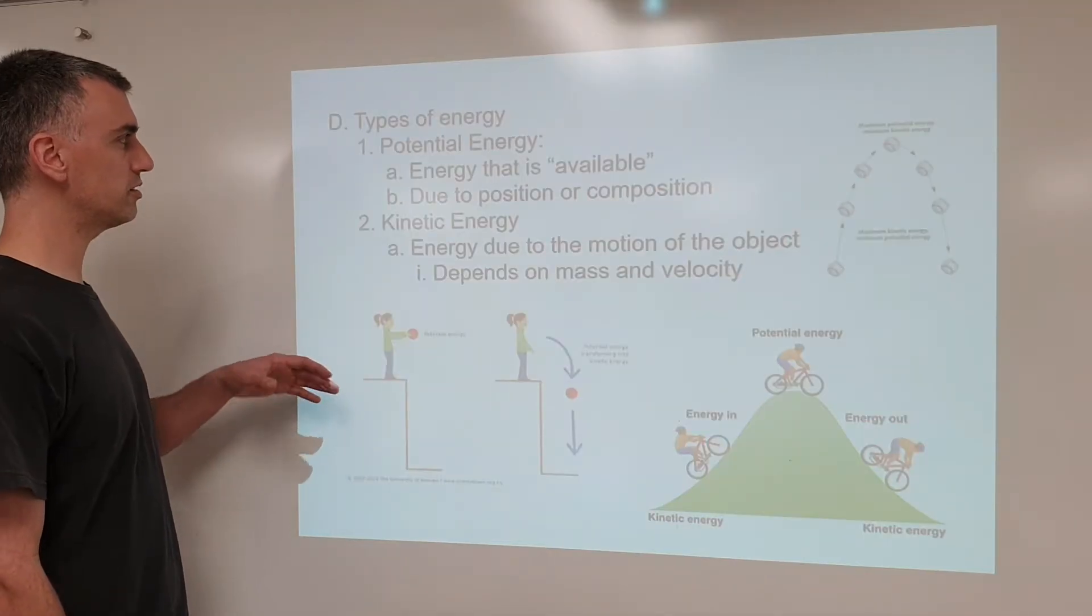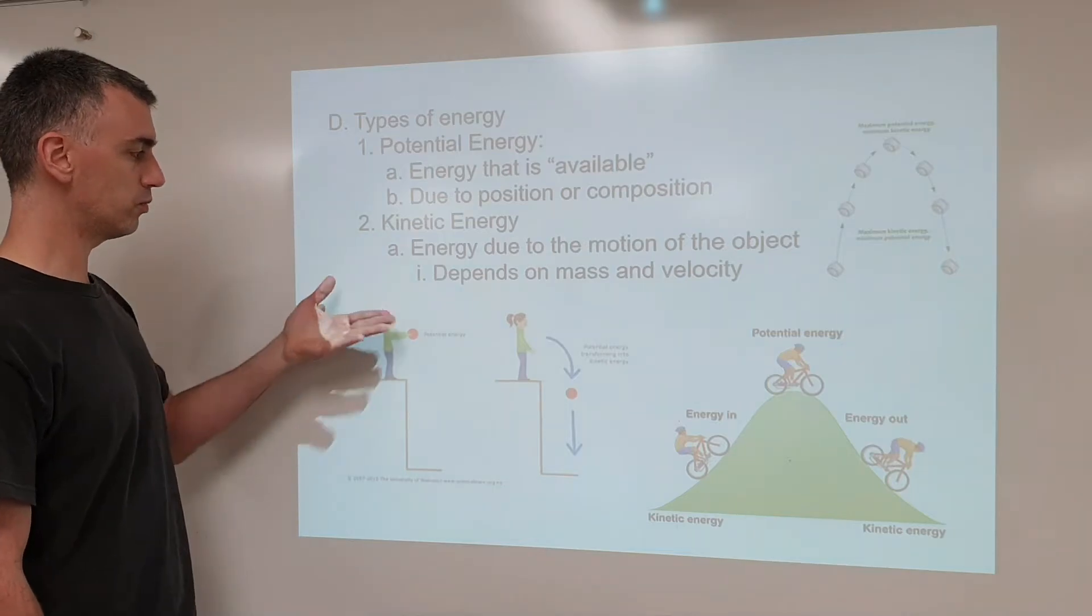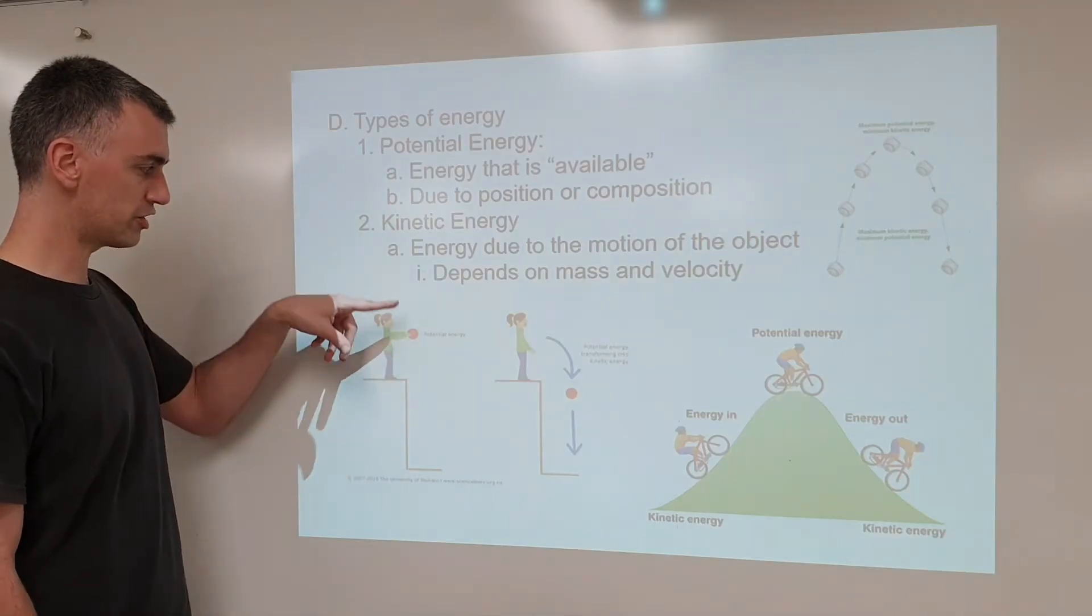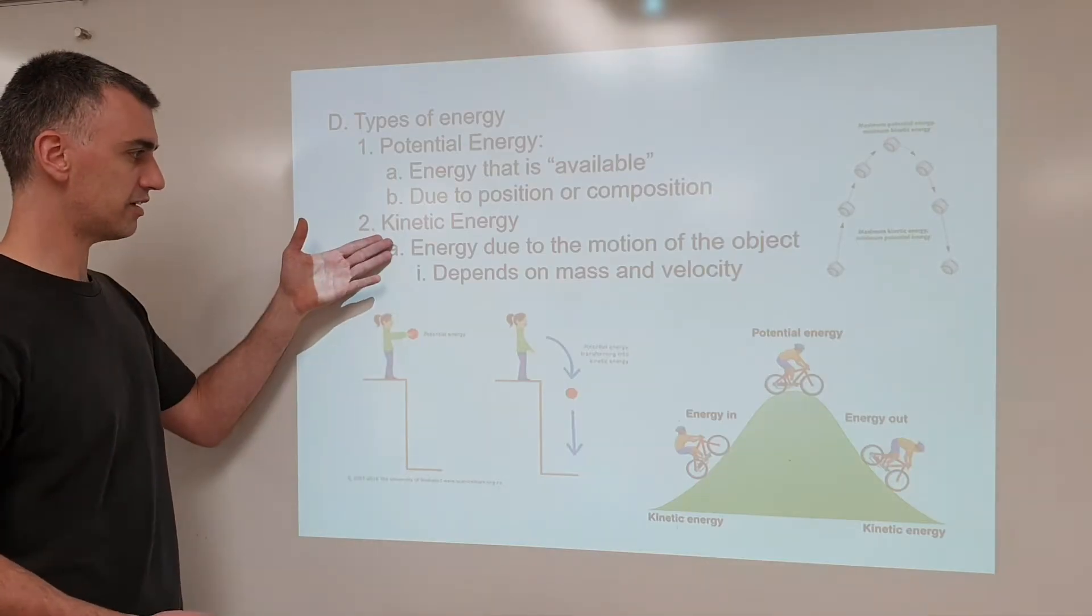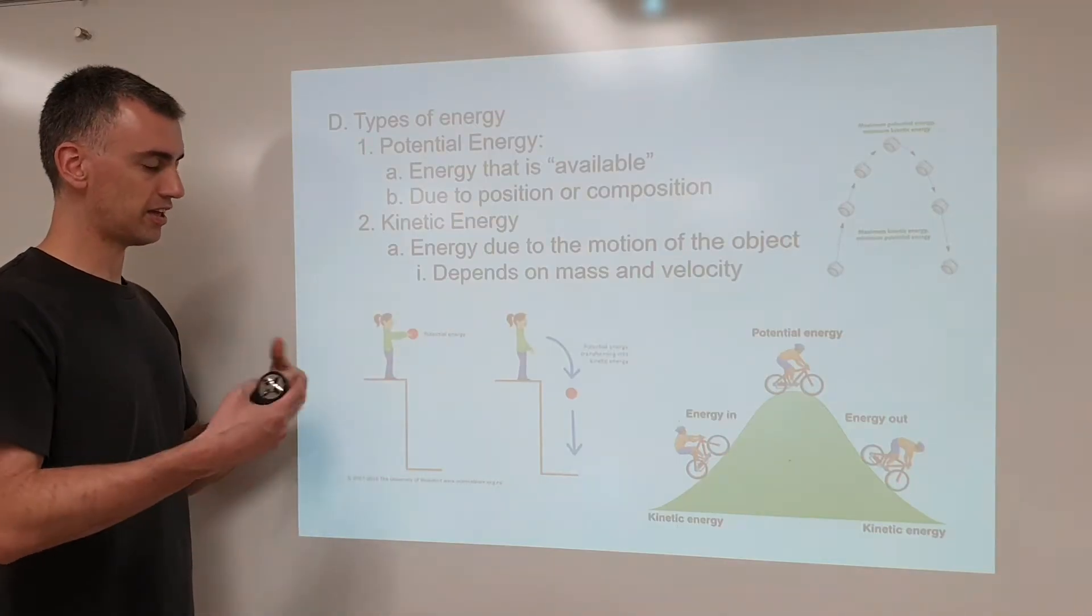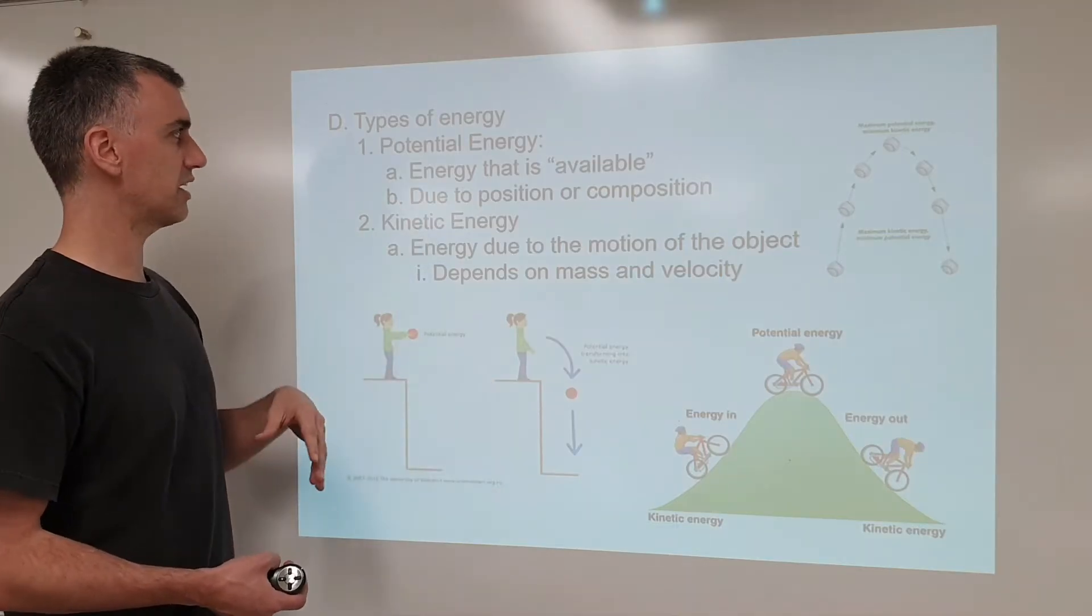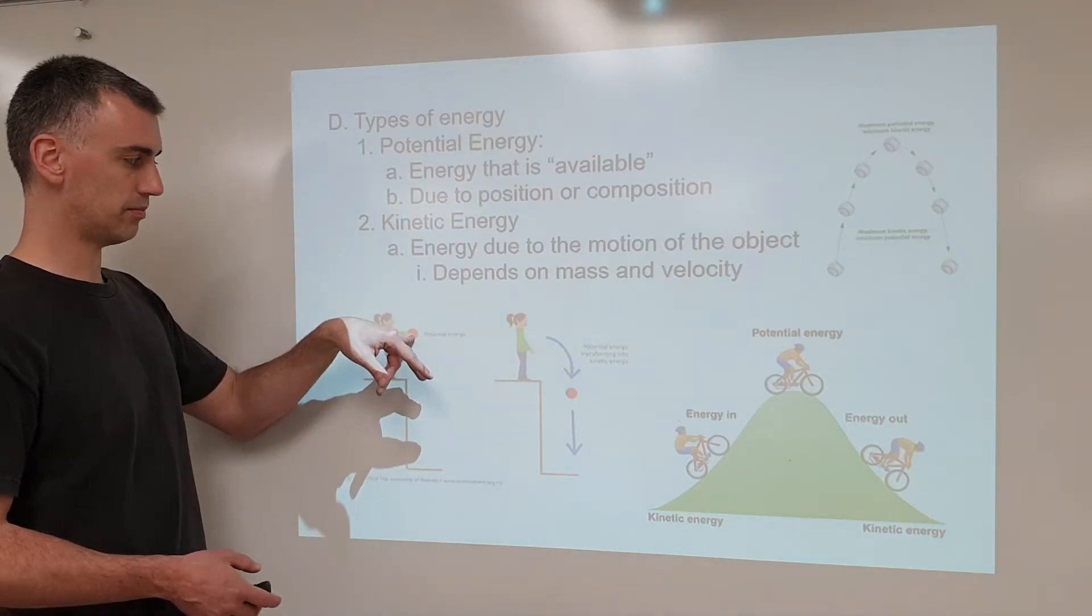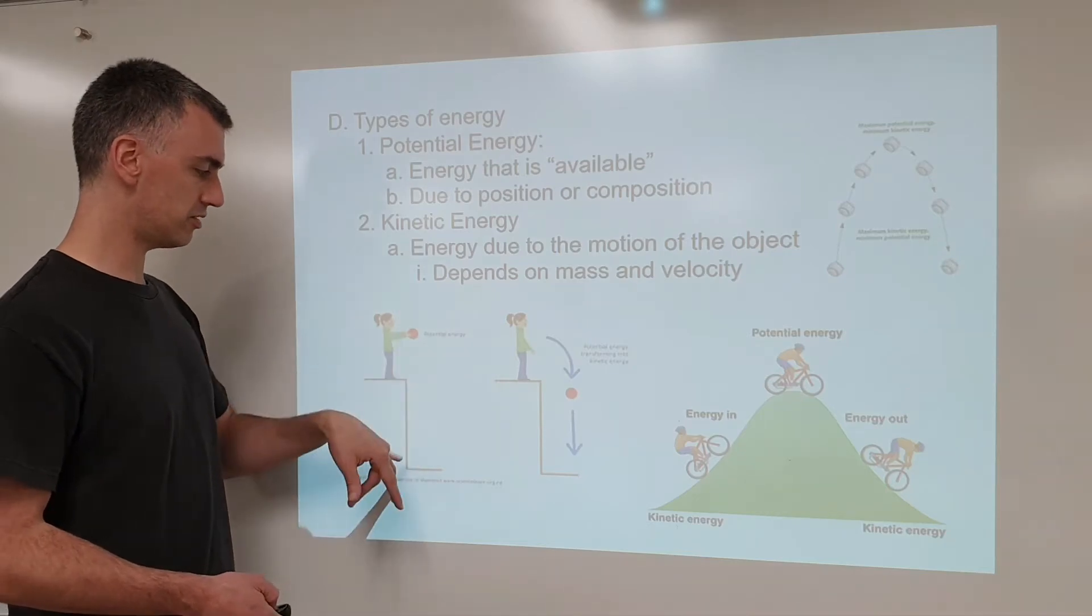When we look at energy, we divide it into energy of position, potential energy, the energy that it could gain if it was moving. So this bowling ball, for example, its potential energy comes from being held high above the ground, and the higher you hold it, the more potential energy. Whereas kinetic energy is the energy of movement. So if it's moving fast, high kinetic energy. If it's moving slow, low kinetic energy.